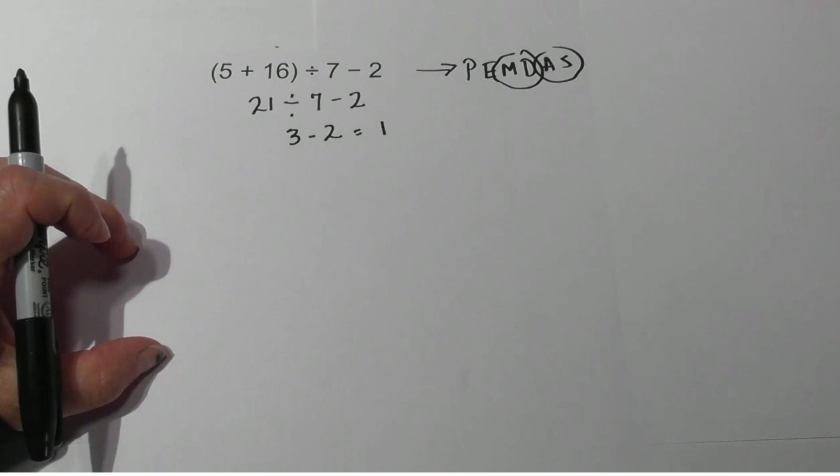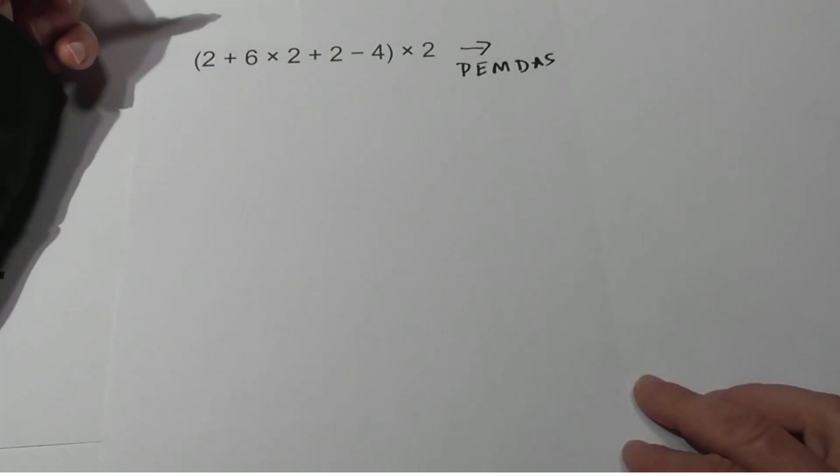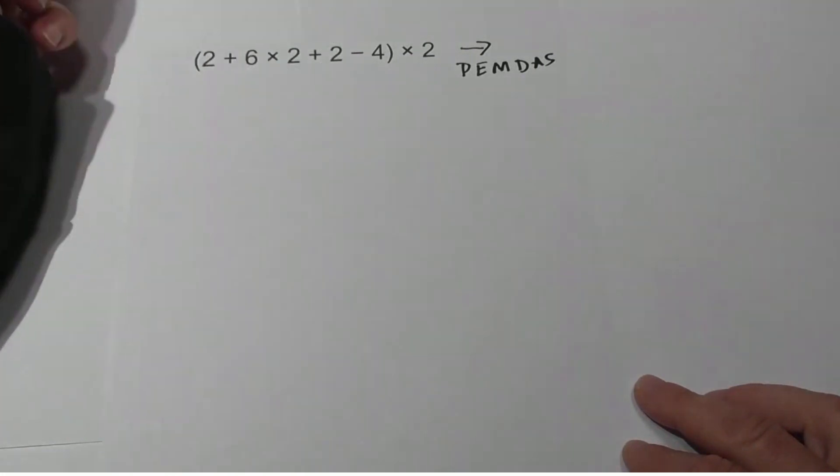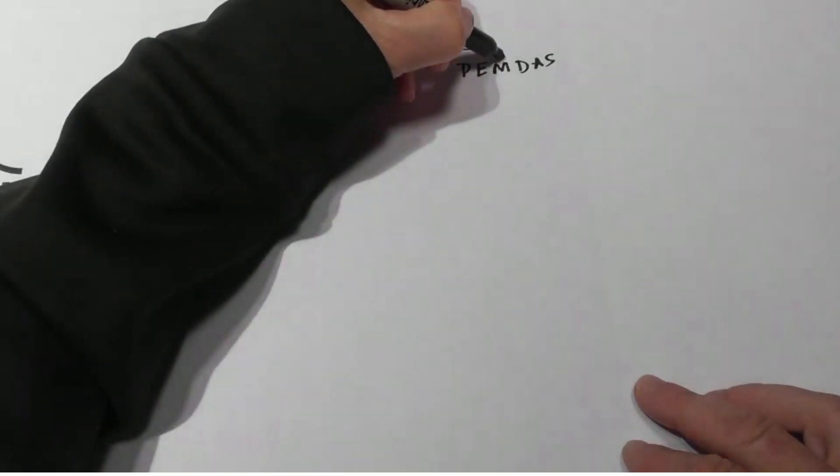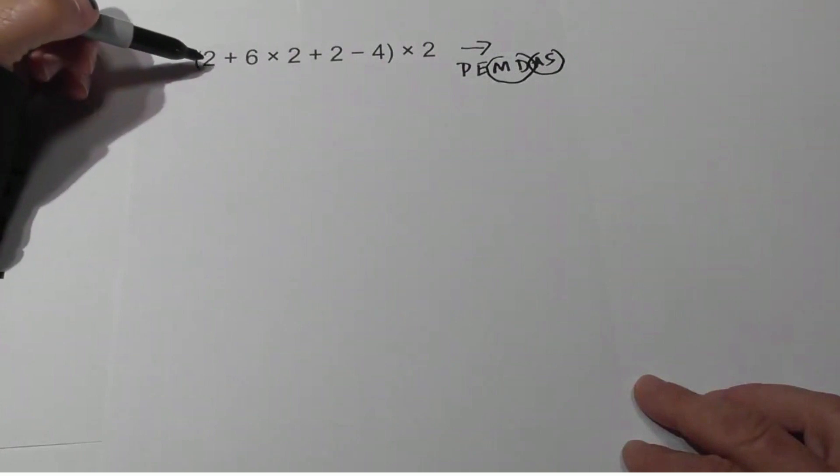So, fairly simple following the rules. Going left to right, do we have parentheses? Yes. Do we have exponents? No. So we need to start with the parentheses. Remember, multiplication and division go together; adding and subtracting go together. So we need to start with multiplication.